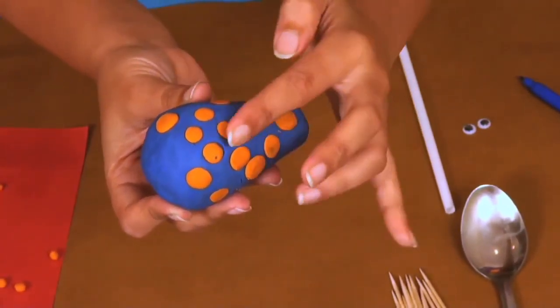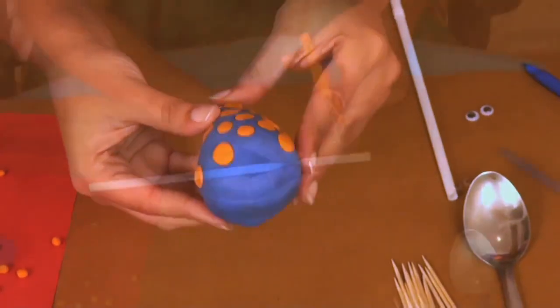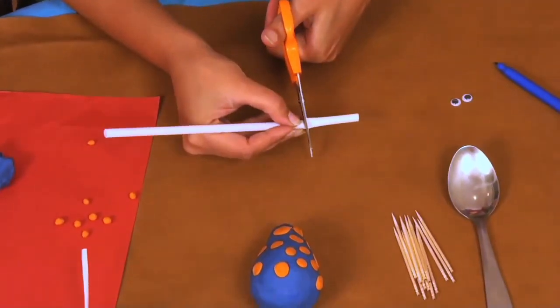Kids, you can use any color spots for your whale. Orange is one of my favorite colors, which is why I'm using it.